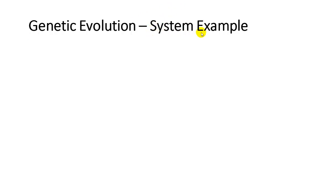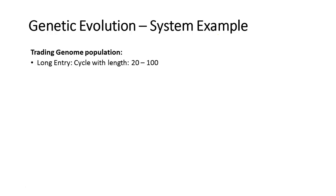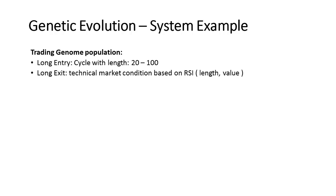Let's review a genetic evolution system example. Our trading genome population is defined: we want long entry signals based on a cycle with a length between 20 and 100 bars, and we add a long exit signal based on technical market conditions. If we have an overbought market, we want to close existing long trades, choosing a technical market condition based on the RSI indicator with an unknown length setting.